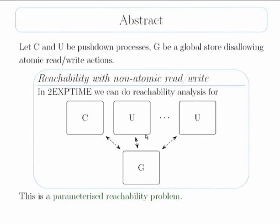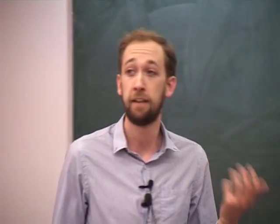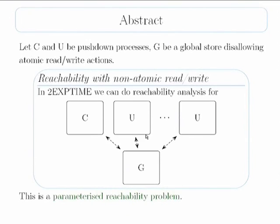We're going to take two pushdown systems: C and U. C is a pushdown system we can think of as a controller process, and U is a user process. We're going to put these two systems in parallel — one copy of C and an arbitrary number of U. The whole point is that this number of copies is not fixed from the start; it's part of the problem to discover how many copies of U we can get away with. These processes are put in parallel and communicate through a global store called G, which for the purpose of this talk will have just one variable.